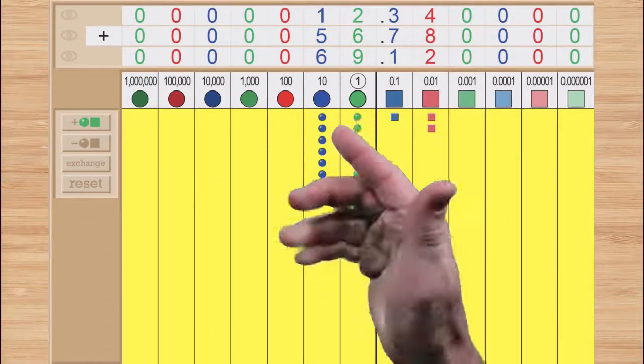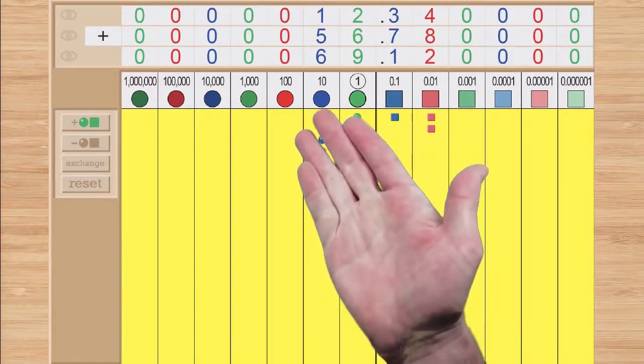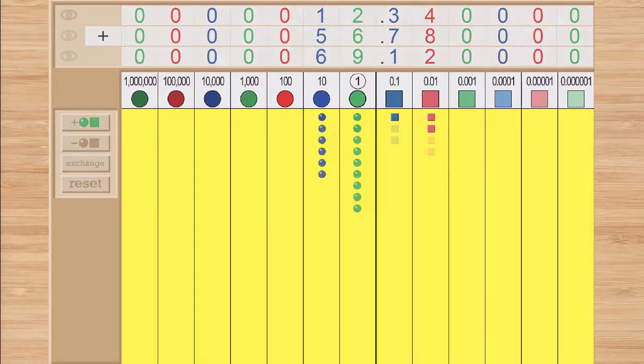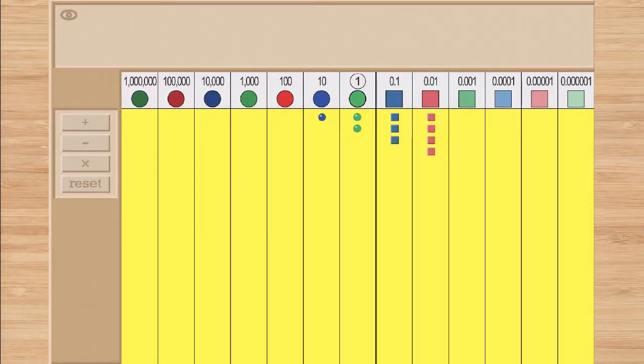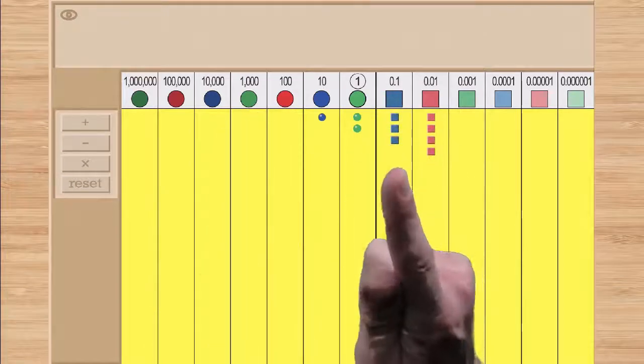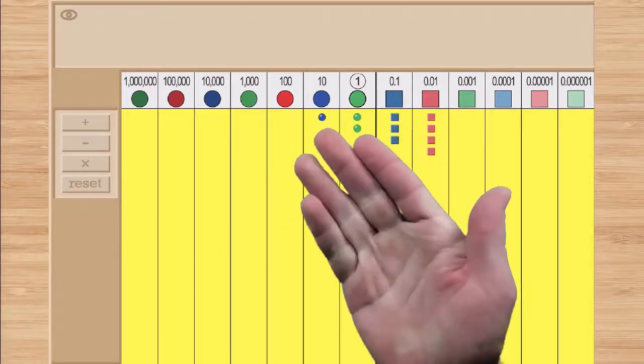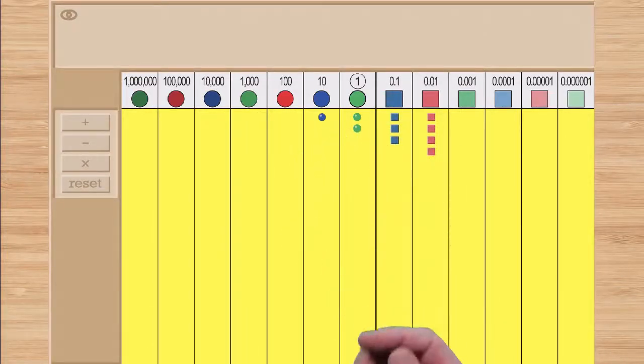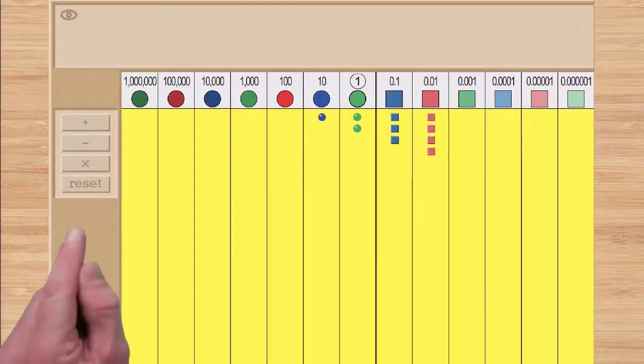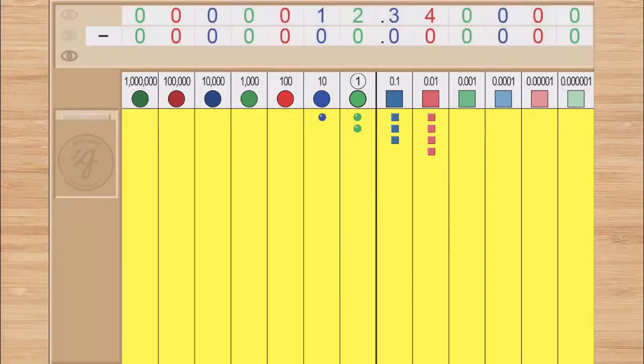Now let's take a look at subtraction on the pocket decimal board. We will follow the same steps, forming a number on the board and then tapping the operation mode button. Choosing subtraction will immediately bring you into solving mode, as there is nothing to add, only to take away.